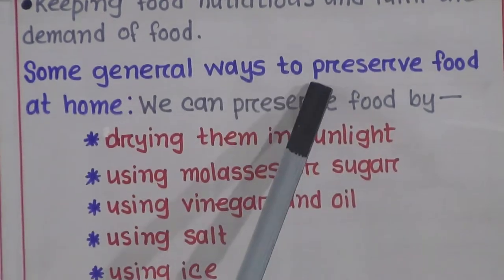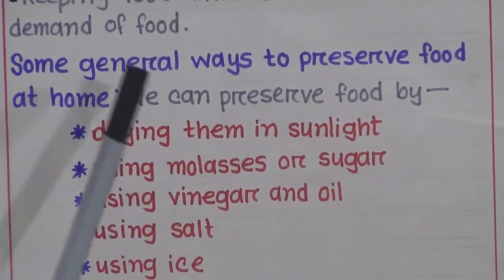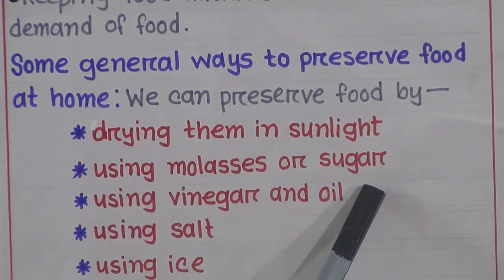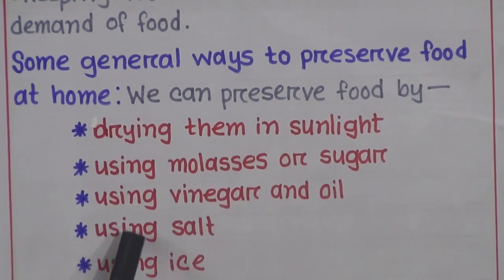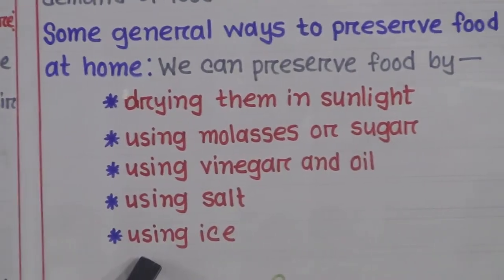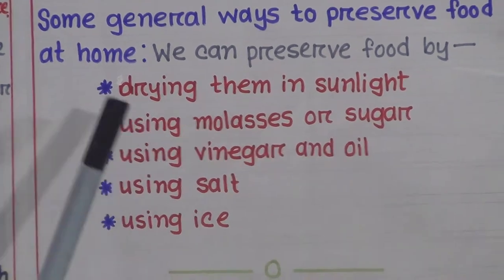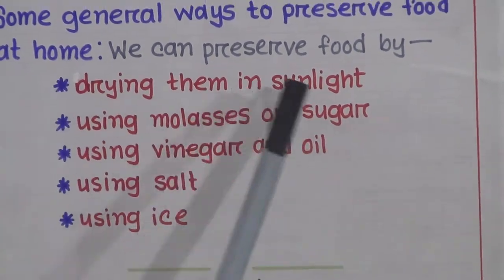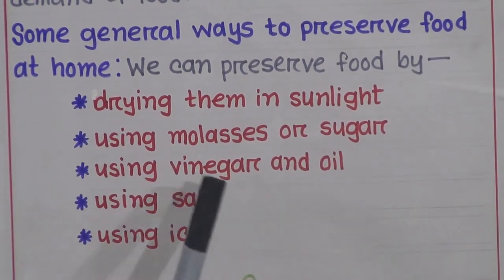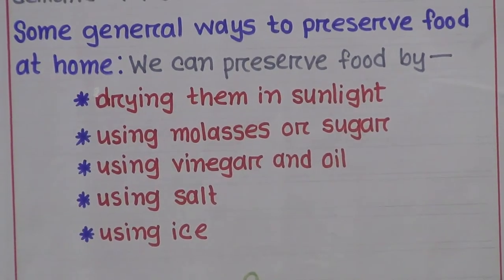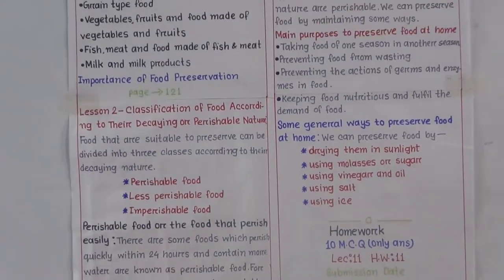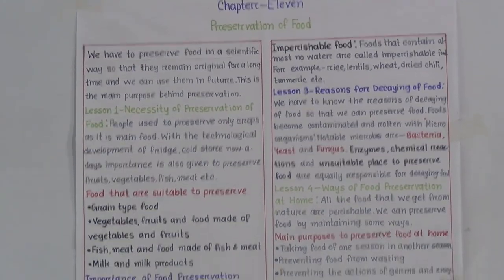Some general ways to preserve food at home: by drying them in sunlight, using molasses or sugar, using vinegar and oil, using salt, and using ice. By following these methods, we can easily preserve our food at home. I hope you have understood the summary of this chapter. Please read the text again and again at home.